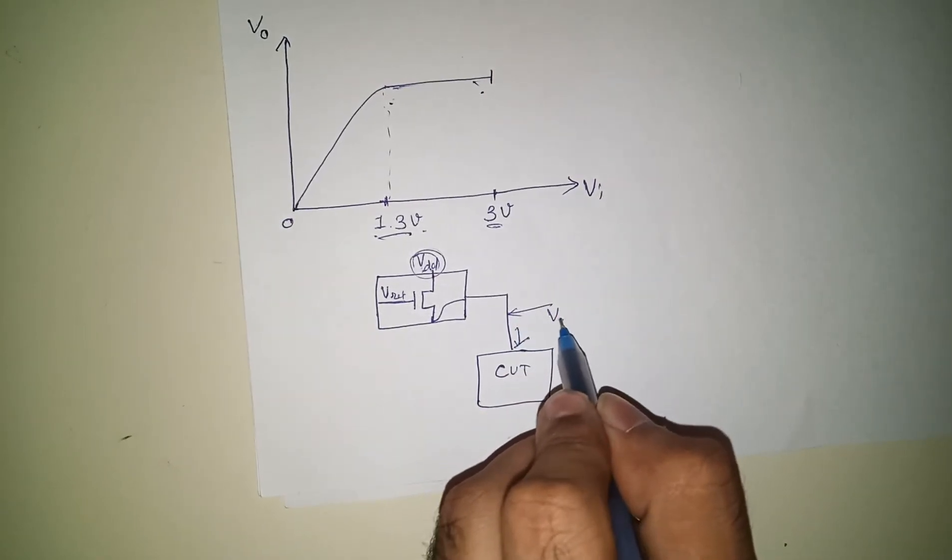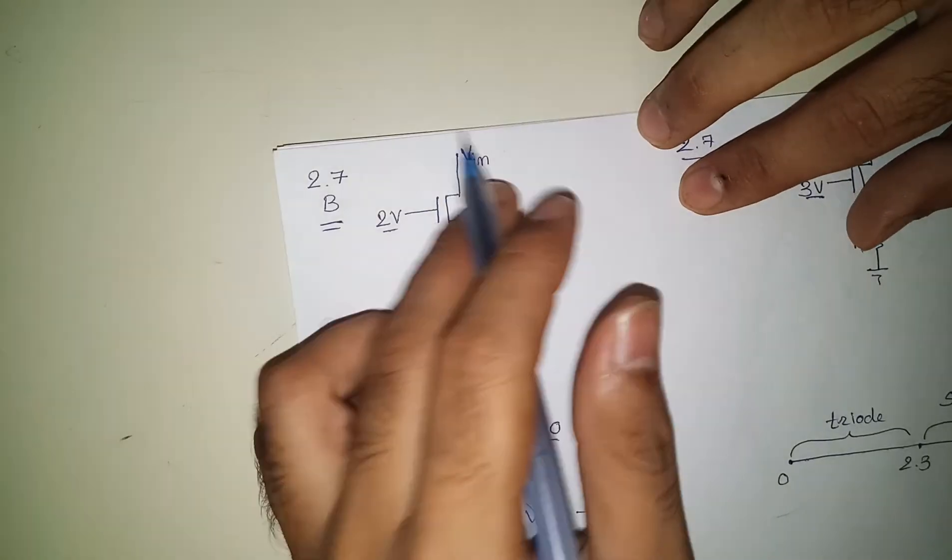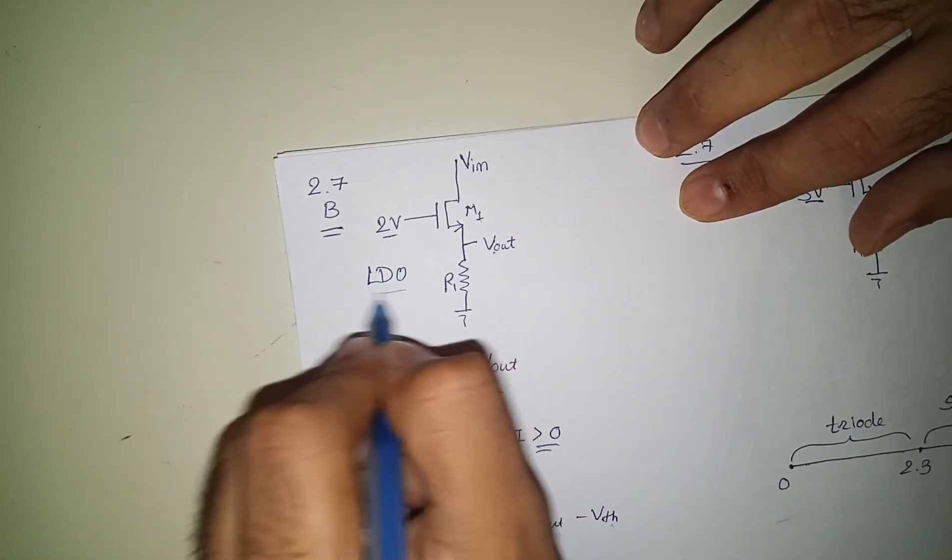So you will find the power amplifier structure of LDO like this. And this is the basic application for that.